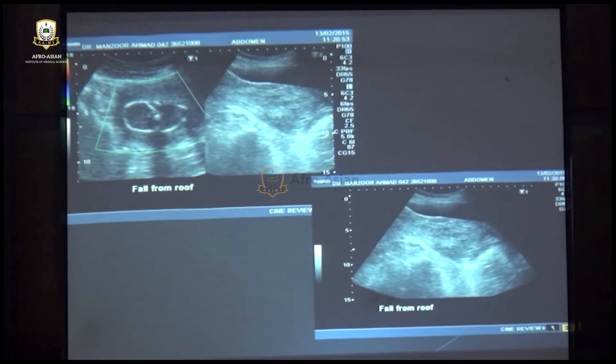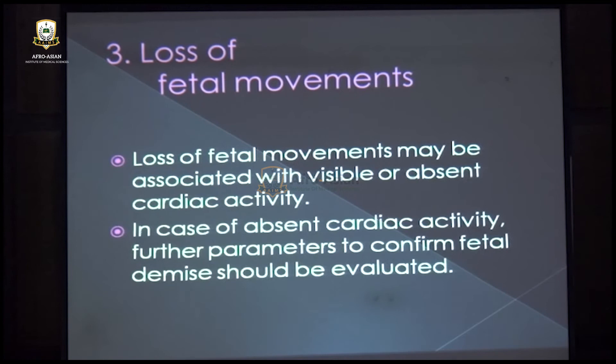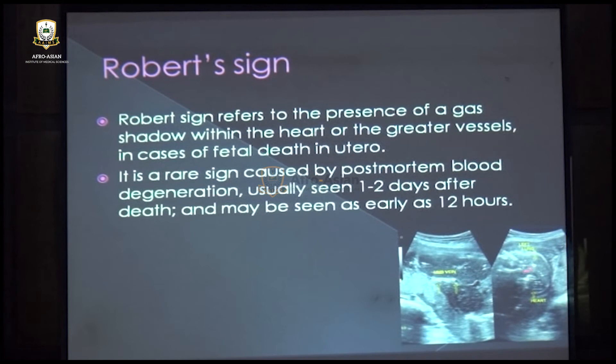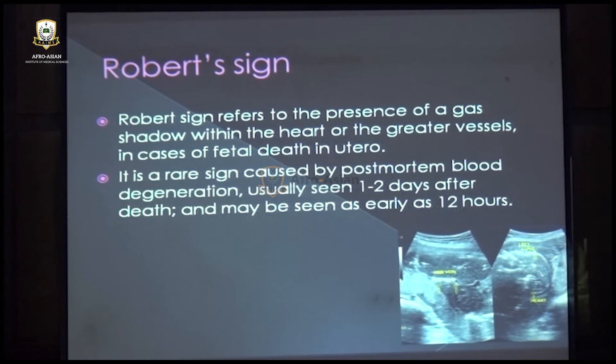The third presentation is loss of fetal movements. We must first check for cardiac activity — if cardiac activity is absent, this is a definitive case of intrauterine fetal demise. Additional confirmatory signs include Roberts sign, which is gas within the fetal blood vessels appearing as echogenic foci within the heart and limb vessels due to blood degeneration — this sign appears within 12 hours after fetal death. Soft tissue edema also appears within 12 hours of intrauterine fetal demise, seen as edema around the scalp and chest wall.